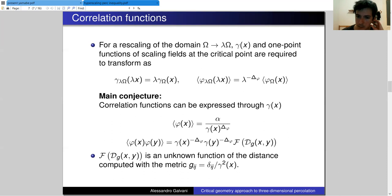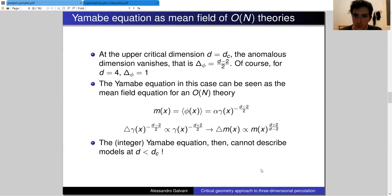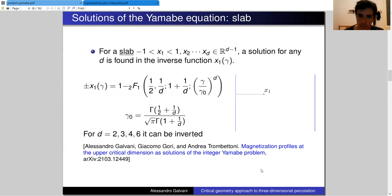Based on our conjecture, this distance should be calculated not just with the flat Euclidean distance, but rather by using the metric that we have introduced. This seems maybe a bit too good to be true. Indeed, so far what we have said is not valid for any statistical theory, but just for the ones that are at the upper critical dimension.